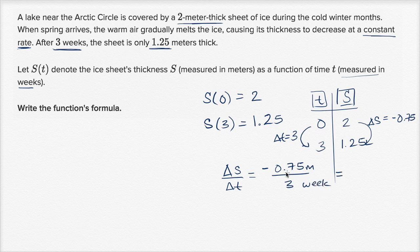Our thickness went down 0.75 meters in three weeks. Or we could say that this is equal to, 75 divided by three is 25, so 0.75 divided by three is 0.25. And we have the negative out there, negative 0.25 meters per week.